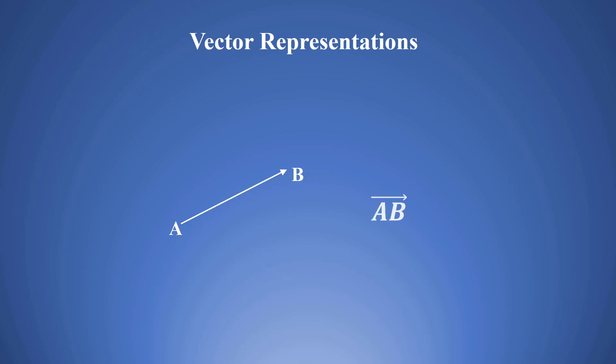Another representation is AB. The arrow indicates the direction of the vector. It's pointing to point B. Therefore, the direction of the vector is towards point B.